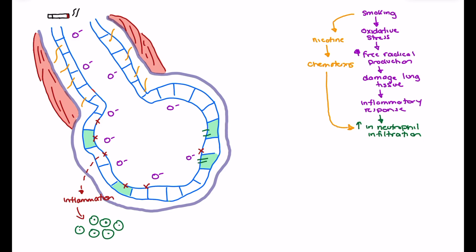There is lots of neutrophil production, and neutrophils will start to infiltrate the lungs, but that chemotaxic effect really increases the number making their way into the lung tissue — primarily the respiratory bronchioles and alveoli. Emphysema is primarily related to an increased production of elastase, which is an enzyme that breaks down elastin. This increase in neutrophil infiltration leads to an increase in elastase production.